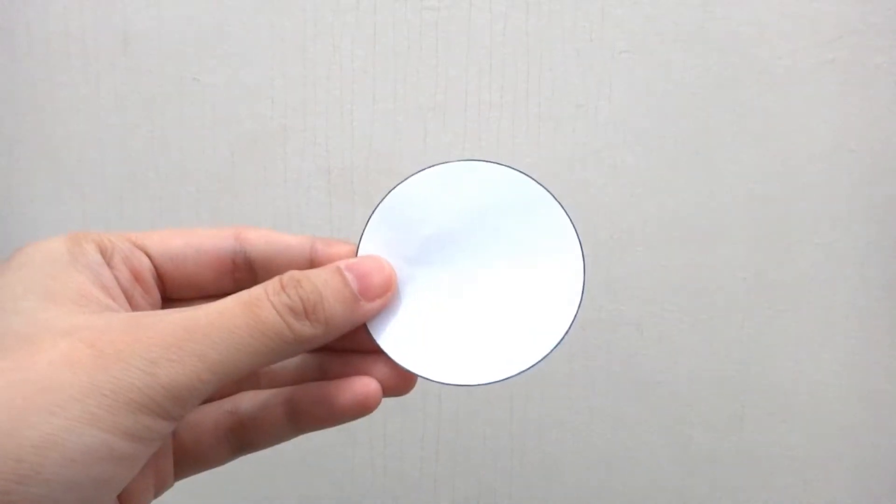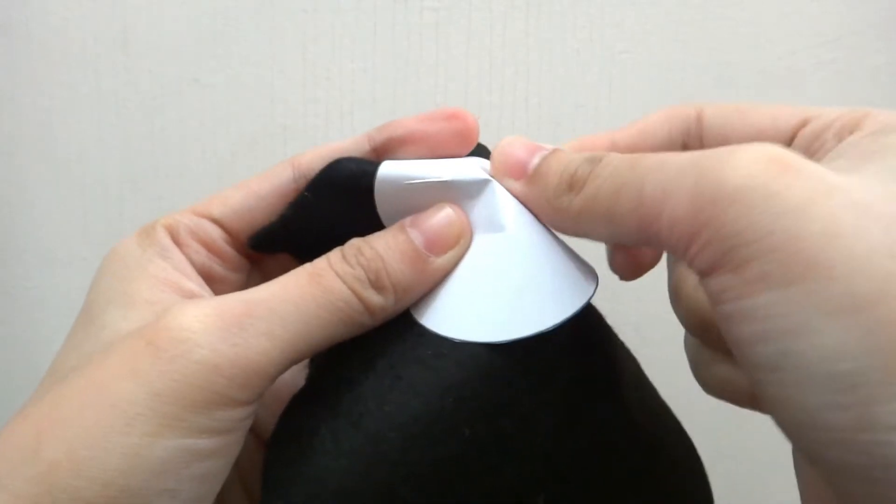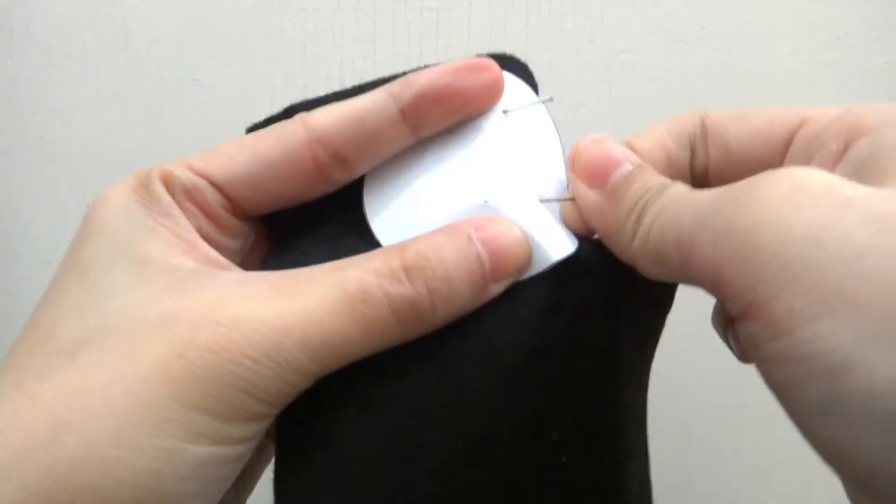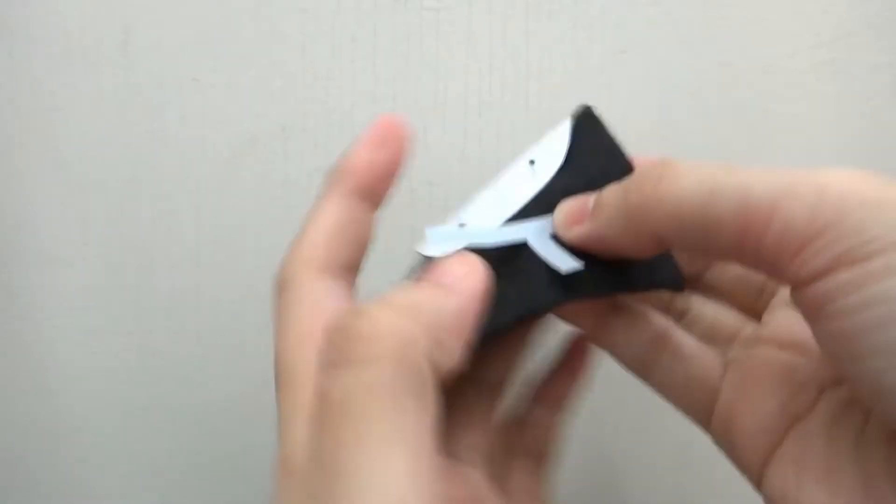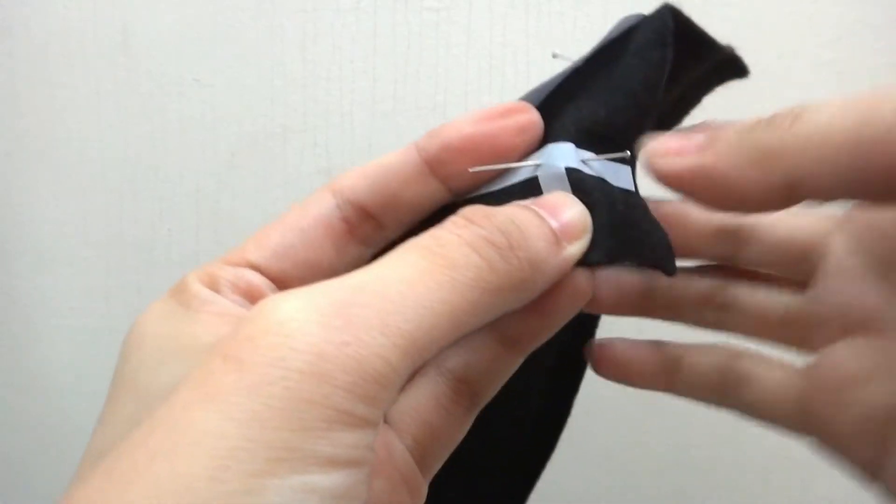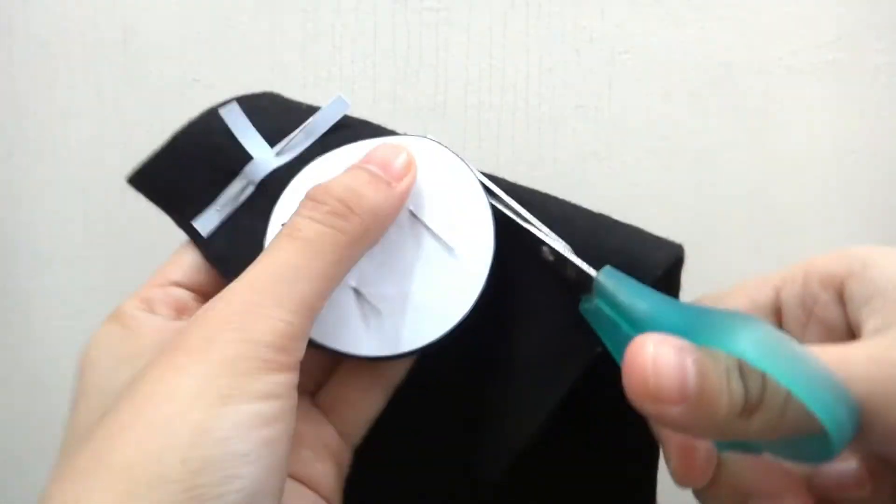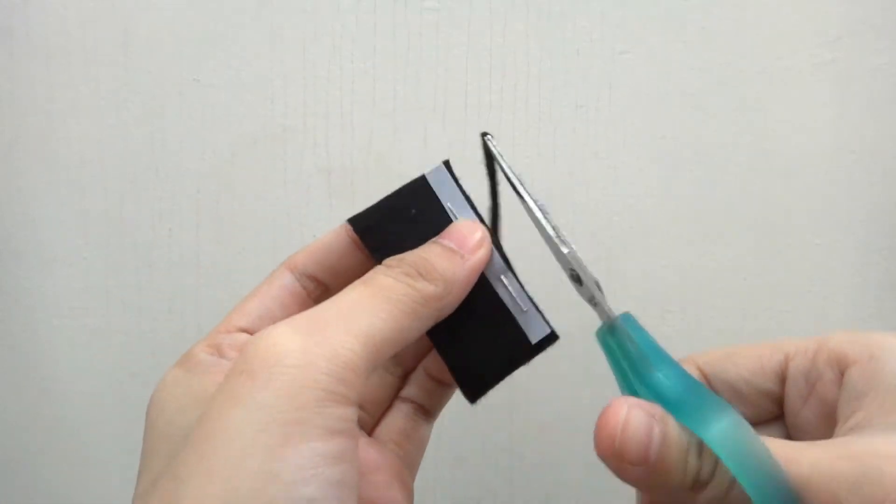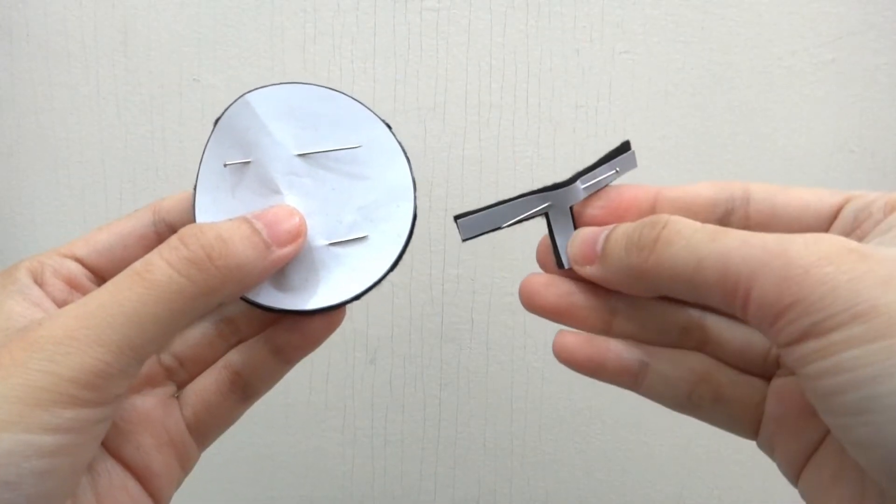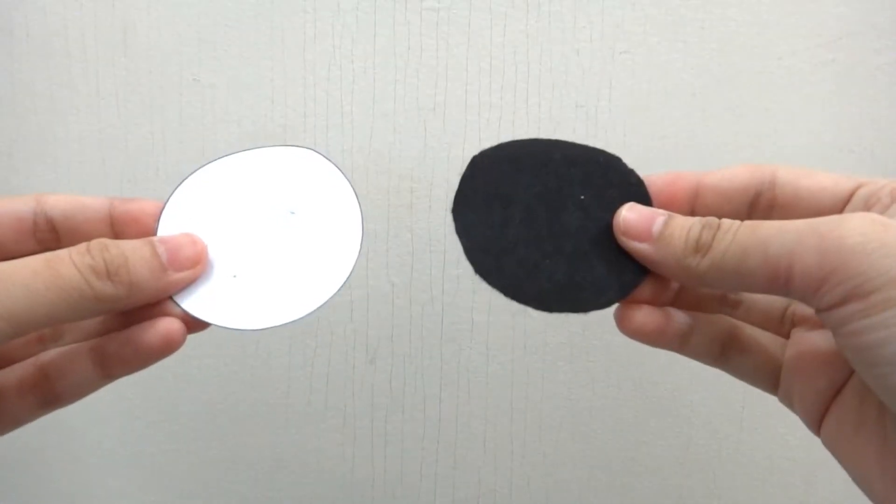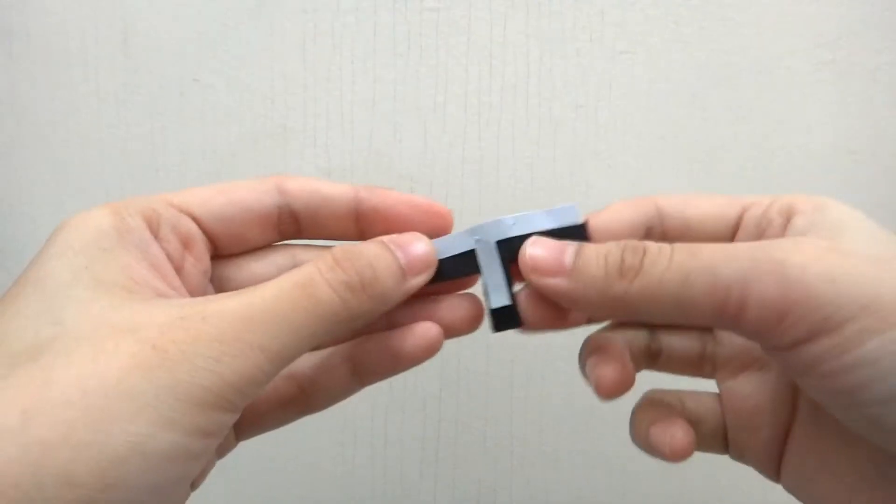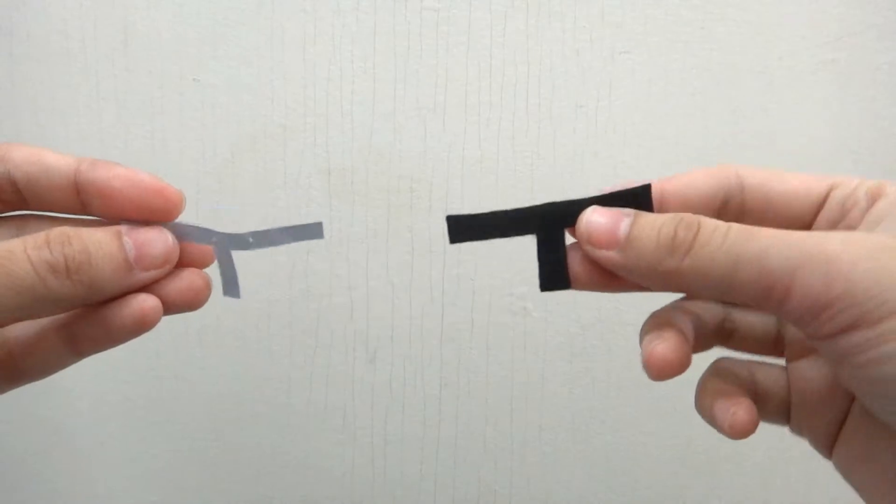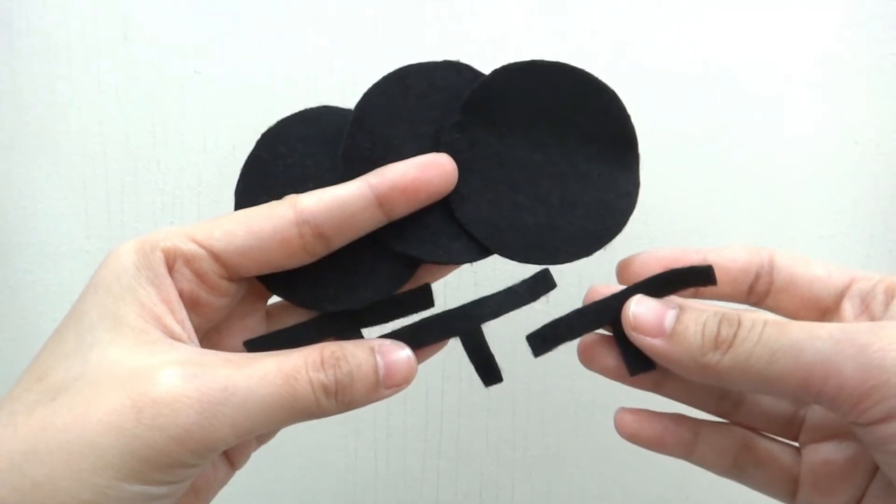Place a piece of black felt, pin and cut. You need to cut out 3 sets for the mask.